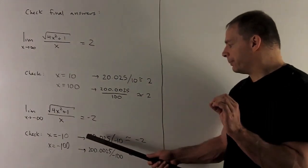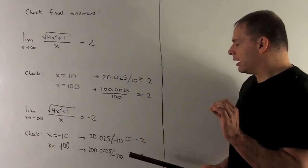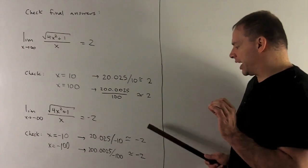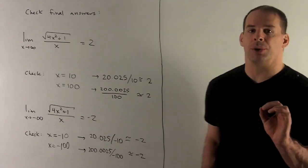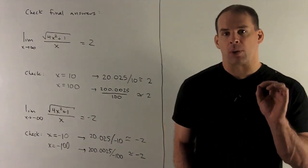So, you'll see we're going to get our same exact answers numerically, and then the sign in the denominator just changes everything to a minus 2. So, the check works out.